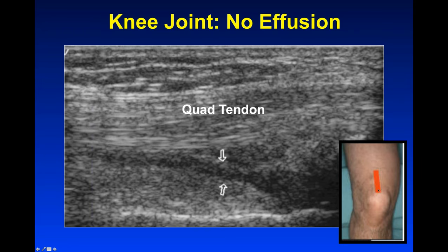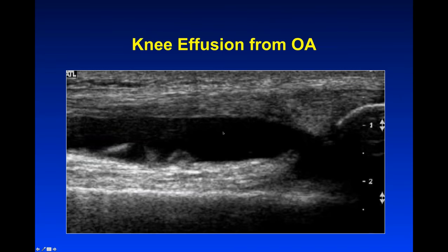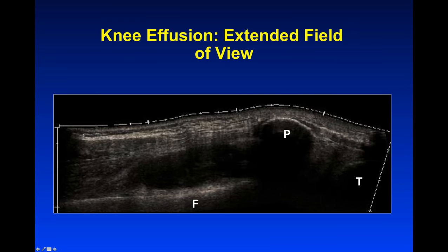For knee joints, we place the probe at the superior pole of the patella and translate it back and forth. At that view you'll see the quadriceps tendon, then two fat pads — the suprapatellar fat pad and the pre-femoral fat pad — separated by the suprapatellar recess of the joint. When there is fluid, that line becomes distended up by fluid and some debris, separating our fat pads above the patella. An extended field of view image shows the quad muscles down to their tendon, the patella, the infrapatellar tendon, femur, and tibia. Extended field of view technology is very useful for showing large pathologies, measuring them accurately, and communicating anatomy to the surgeon.